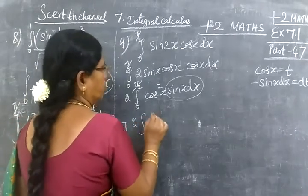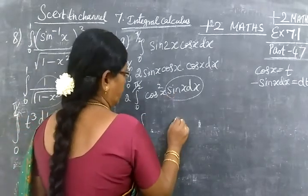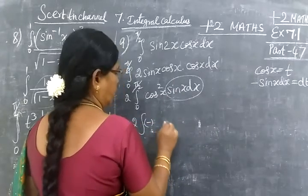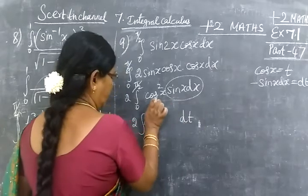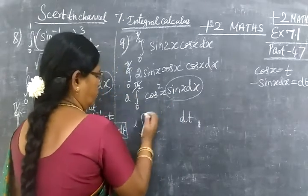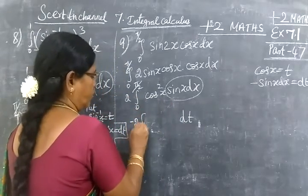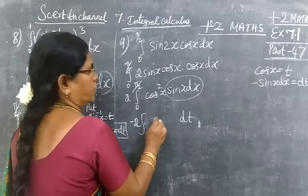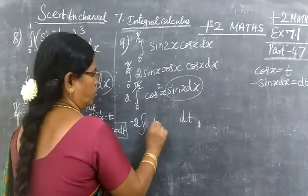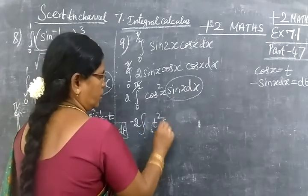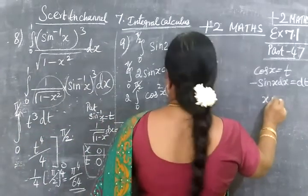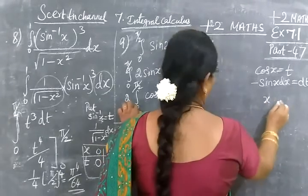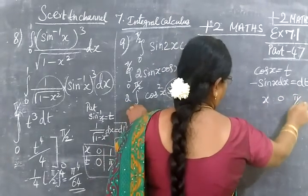So minus sin(x) dx equals dt. We need to change the limit. The integral has a minus sign, so we can write it as minus 2 times the integral. Sin(x) dx equals -dt, so it becomes minus 2 times the integral of t² dt.